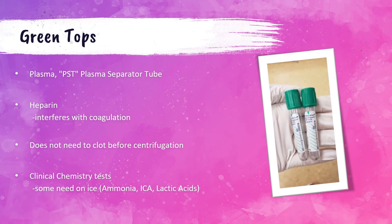The next tube in the order of draw is the green top, often called a plasma separator tube or PST. The main difference between the PST and the SST is that the PST has plasma — which is like serum but still has clotting agents like fibrinogen in it. This tube contains heparin, which prevents the blood from clotting, so it does not need to clot before it is spun down. Many clinical chemistry tests are run on PSTs, and they help with quicker turnaround time because we don't have to wait for them to clot.